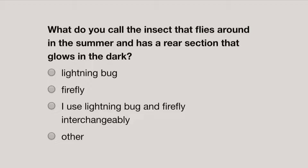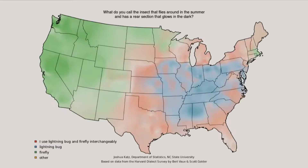You could answer this: lightning bug, firefly, I use them interchangeably, or other. People would go to this, select their answer, and it would display a map. In the green areas, this is where people tend to say firefly. The blue areas are where people tend to say lightning bug, and the red areas are where people use those two words interchangeably.